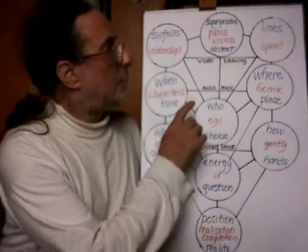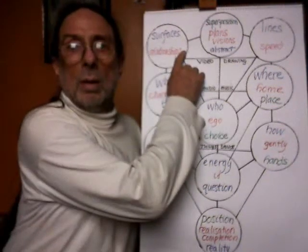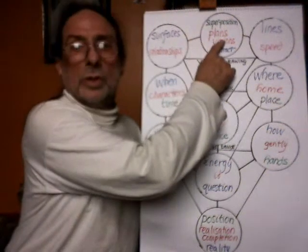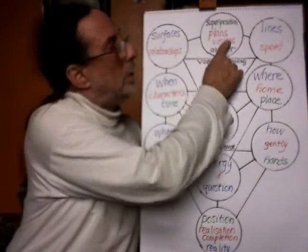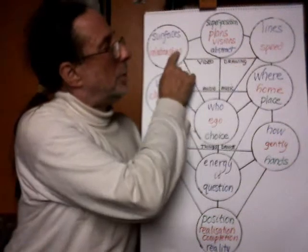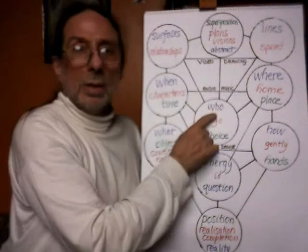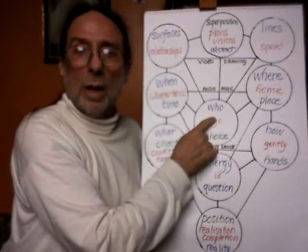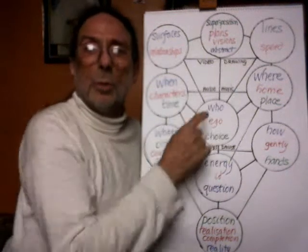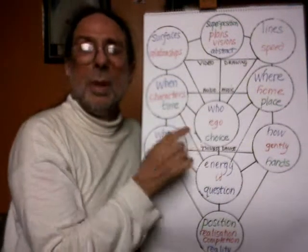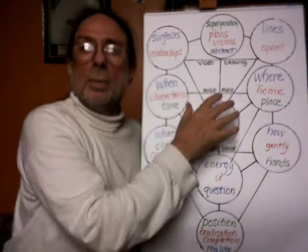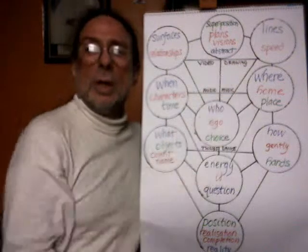So here we have the fourfold system — one, two, three, and then the five, the I, here, here. Remember the fourfold system, and then this is developed three times with the three triangles.